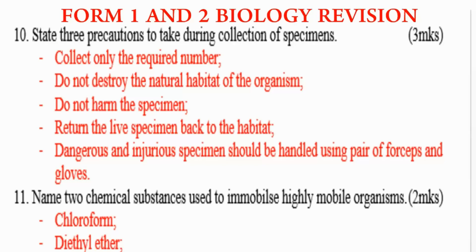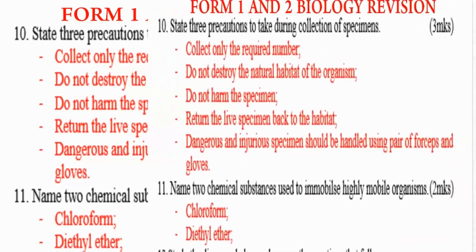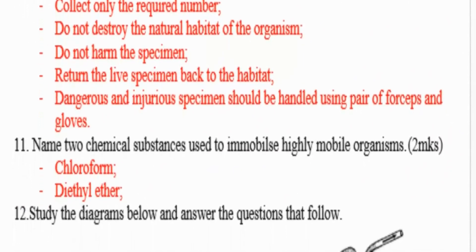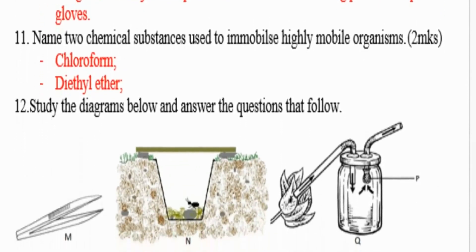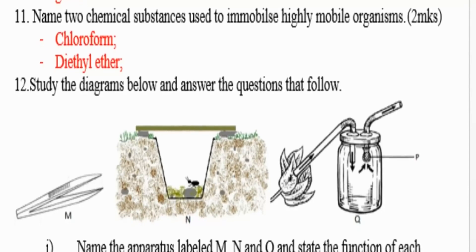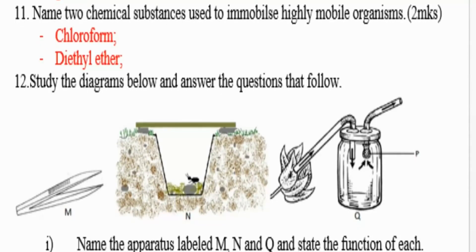Question number 11: name two chemical substances used to immobilize highly mobile organisms. We have chloroform and diethyl ether. Those are the two chemicals used to make fast-moving animals immobile, because you cannot catch them when they are moving very fast. You apply those chemicals and they make the animals unable to move.